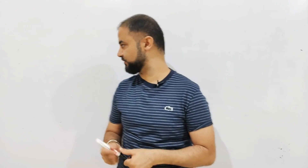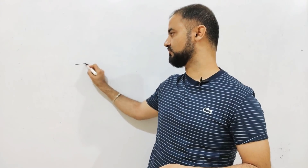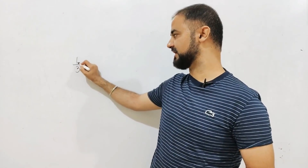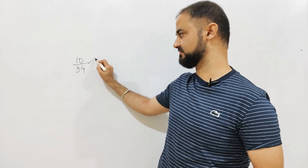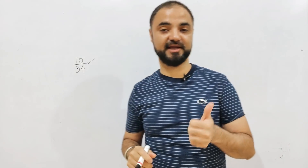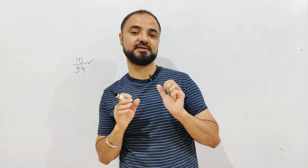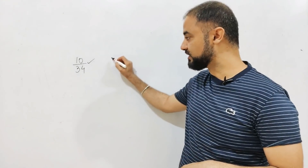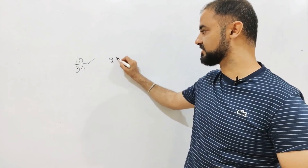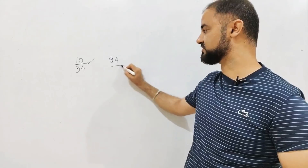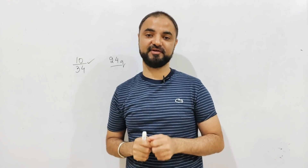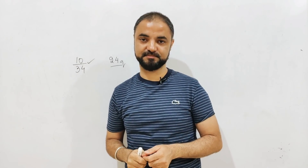Suppose you're doing around 8 questions correct. In Maths, out of 34, I'm doing around 10 questions correct. That is my correct question. 10 marks you're getting. But 24 questions which you are not able to solve — I want you to identify those questions.